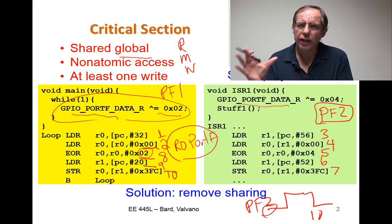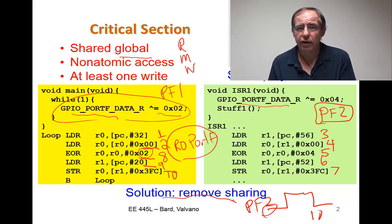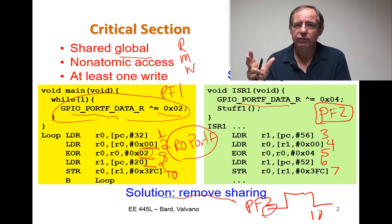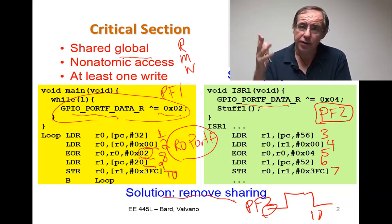So, one solution to a critical section is to remove the sharing, either by using a local variable if you can, or in this case, when accessing the I/O devices, we'll use bit-specific addressing. Let's look at another example.